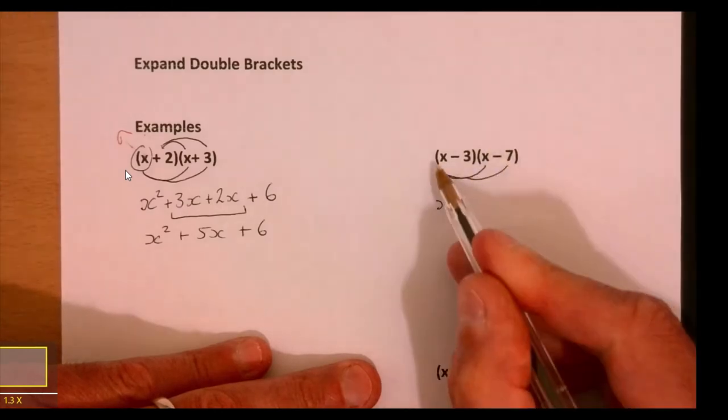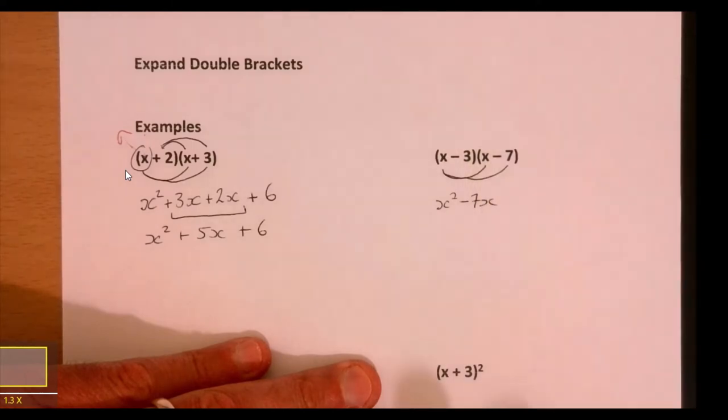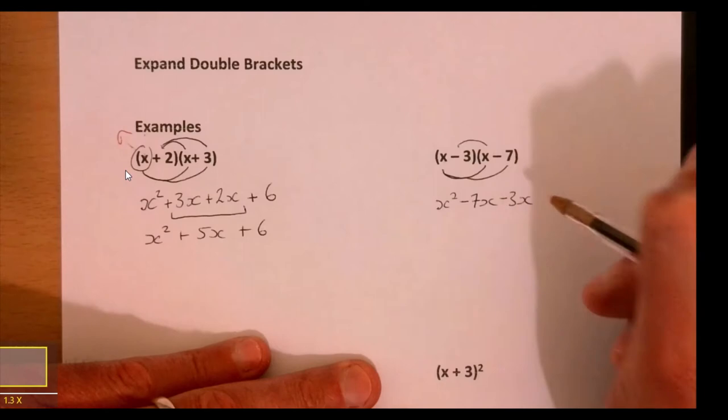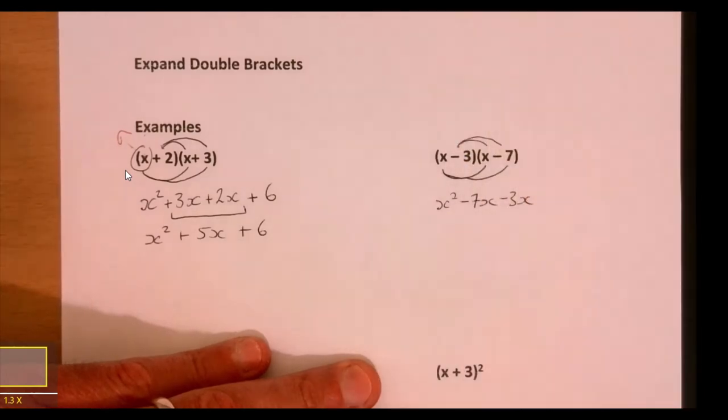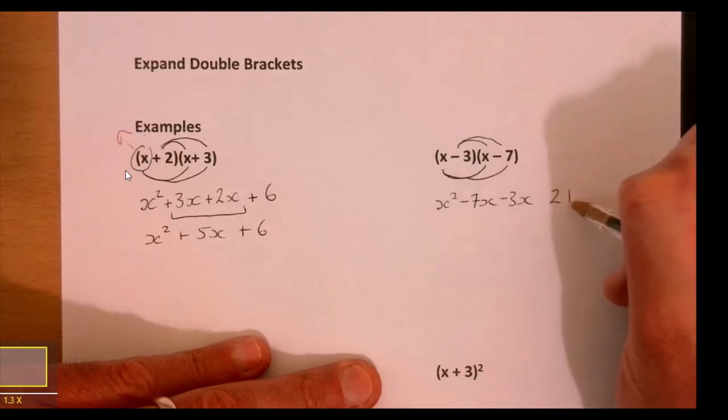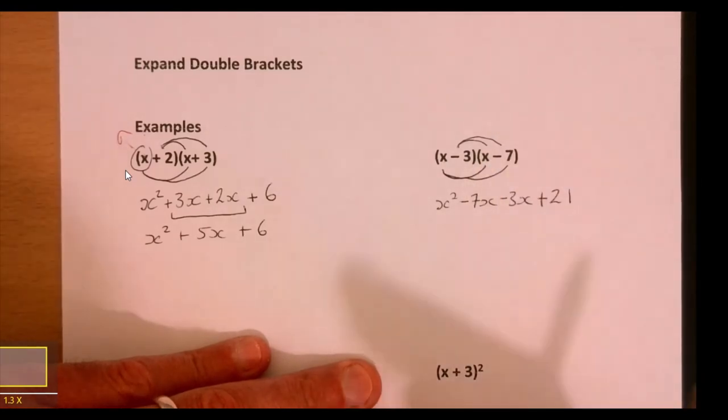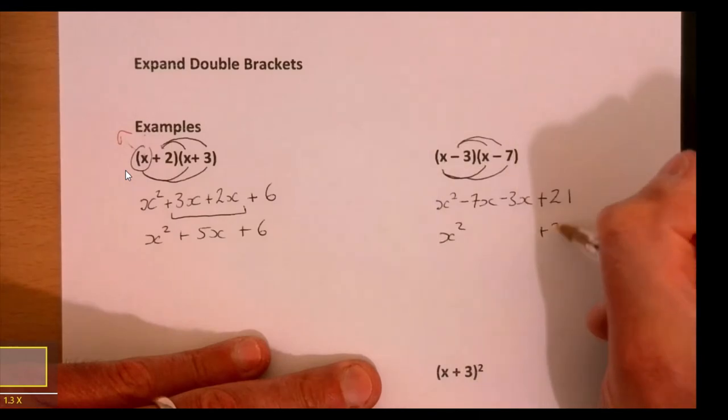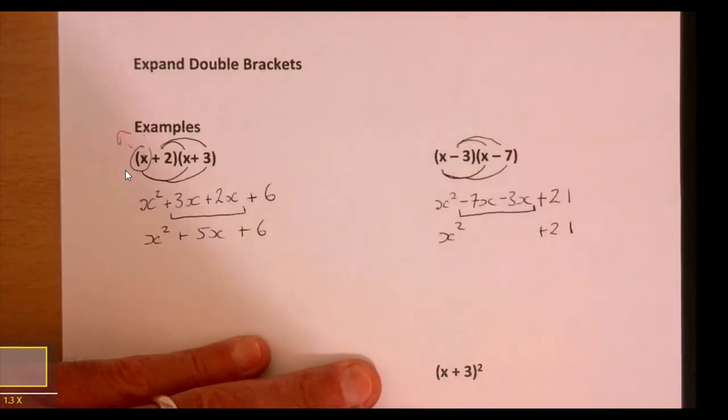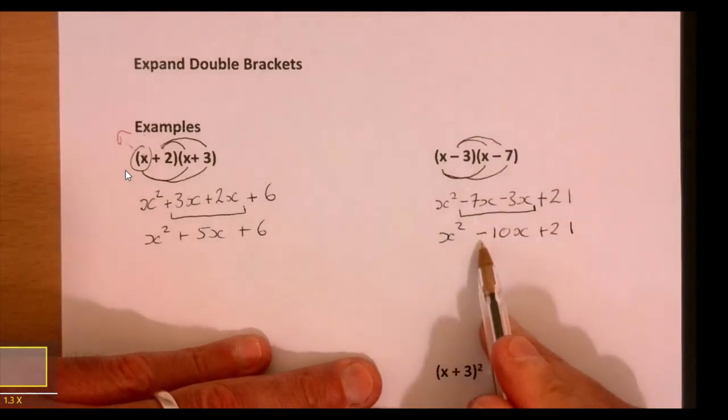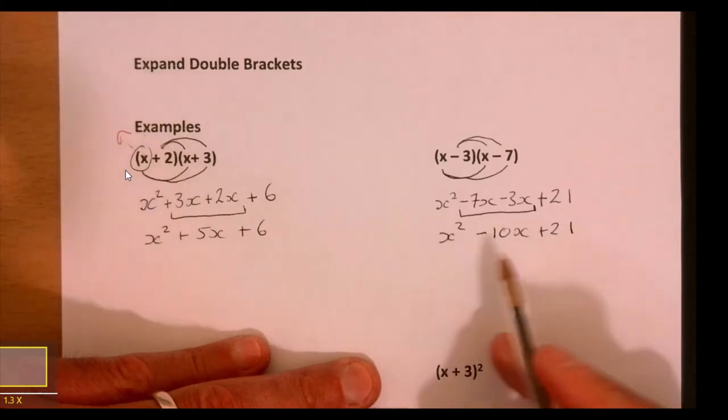This one times this one gives minus 7x. Now it's minus three, so minus 3x. Then minus three multiplied by minus seven is 21, and negative times negative is plus. Minus 7x minus 3x - the classic mistake is people say that's a plus. It's not: x squared minus 10x plus 21. Think about why people make that mistake.